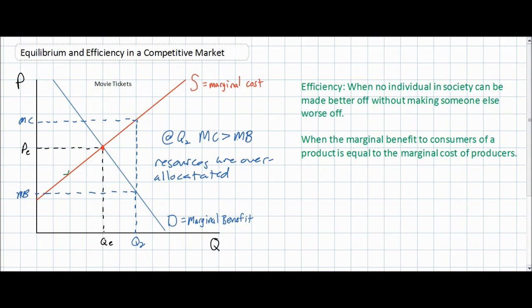Society would be better off with a more efficient allocation of resources if a lower quantity was produced, because at a lower quantity the marginal cost of producing movie tickets would decrease while the marginal benefit to consumers of enjoying movie tickets would increase. Only at QE is the marginal benefit equal to the marginal cost.